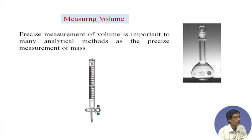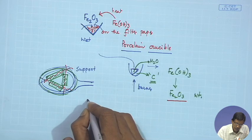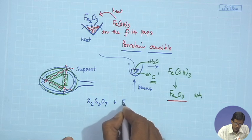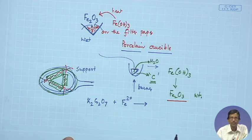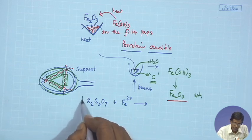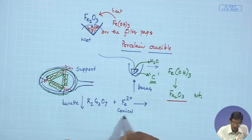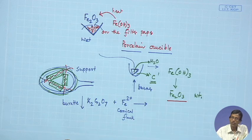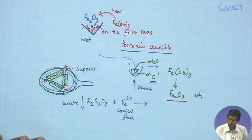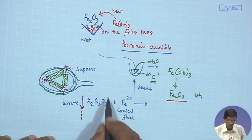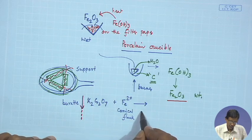K₂Cr₂O₇ is transferred into the burette as the oxidizing agent. Next we will see how you go for the titration using K₂Cr₂O₇ for titration of an unknown solution of Fe²⁺ — K₂Cr₂O₇ will be taken in the burette and the Fe²⁺ solution in the conical flask, and drop by drop we add this solution from the burette to the iron solution.